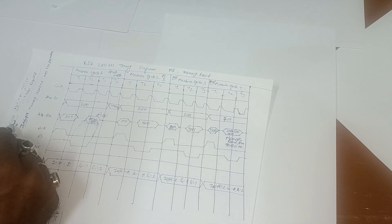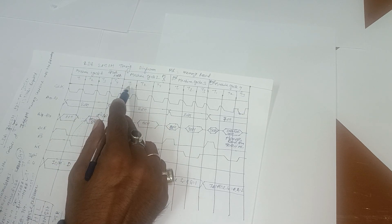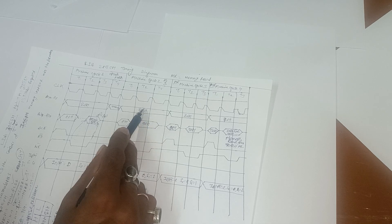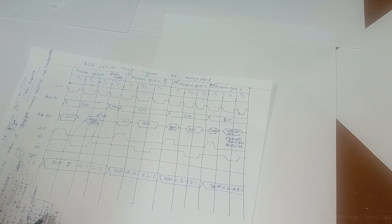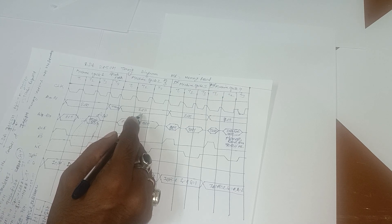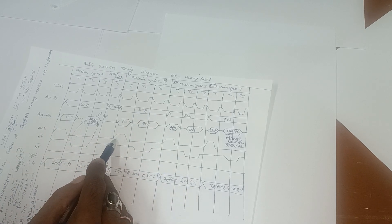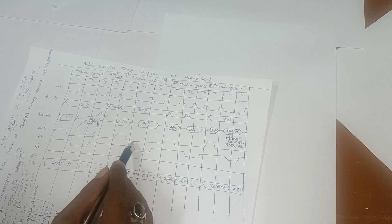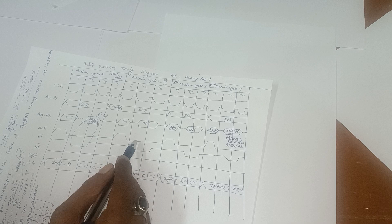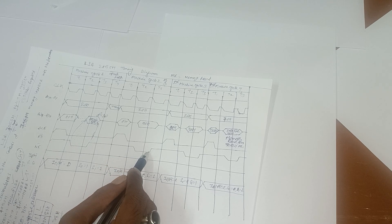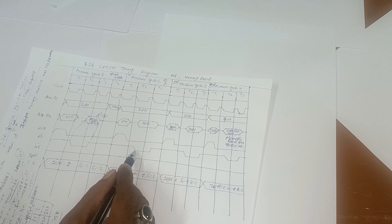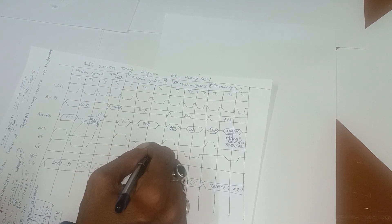Machine cycle 2 handles the lower-order address byte 50H from instruction 7050H — this is a memory read operation requiring 3T states: T1, T2, T3. The program counter now holds 2001H, so the higher address byte on A8-A15 is 20H, and on A0-A7 it is 01H. ALE is enabled in T1 state, then disabled.